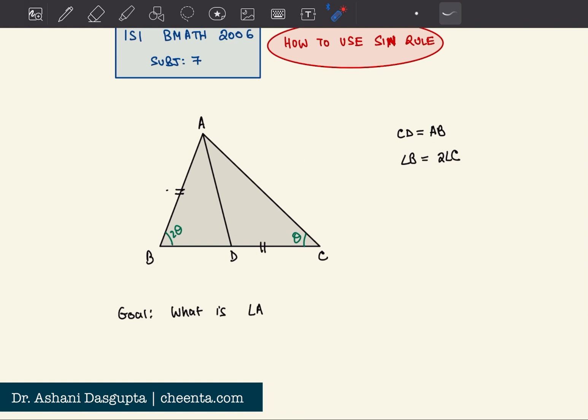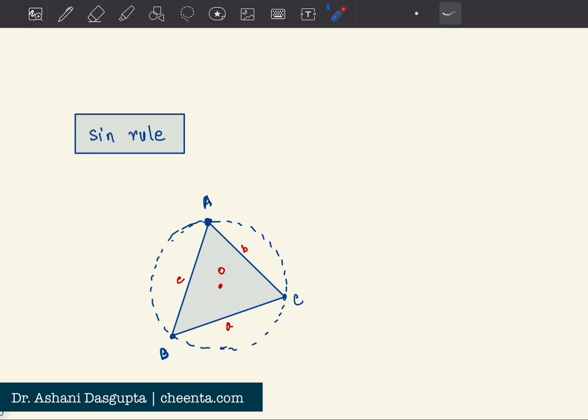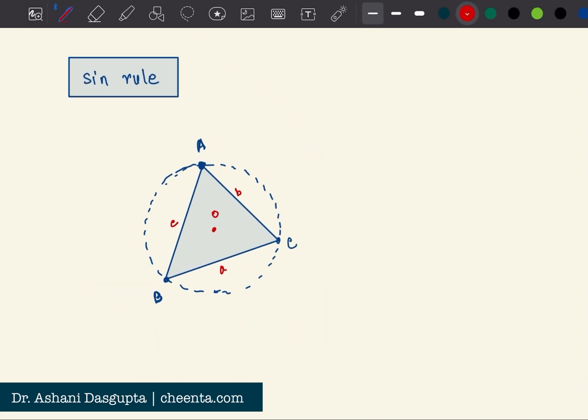Okay, so now let's talk about the sine rule quickly. What it says is that in a triangle ABC, sine of angle A divided by small a - small a is the side opposite to angle A, the length of the side opposite to angle A.